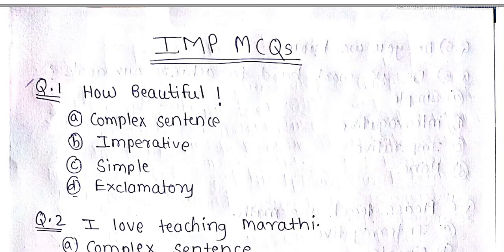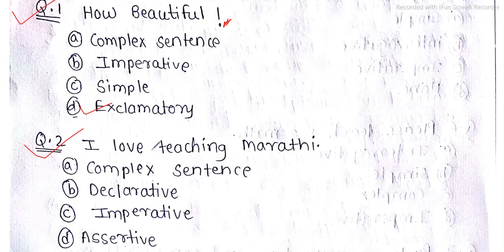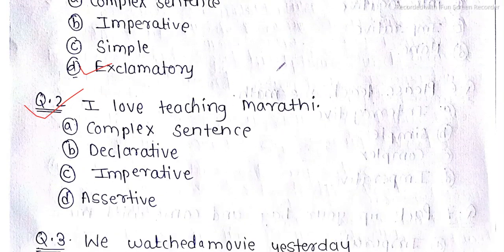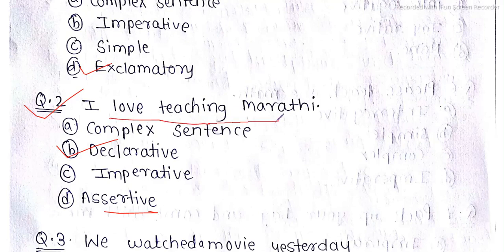Now MCQs related to types of sentences. Question 1: 'How beautiful!' — since we are showing excitement, this is an exclamatory sentence. Question 2: 'I love teaching Marathi.' — it ends with a full stop and is giving information, so this is a declarative sentence.